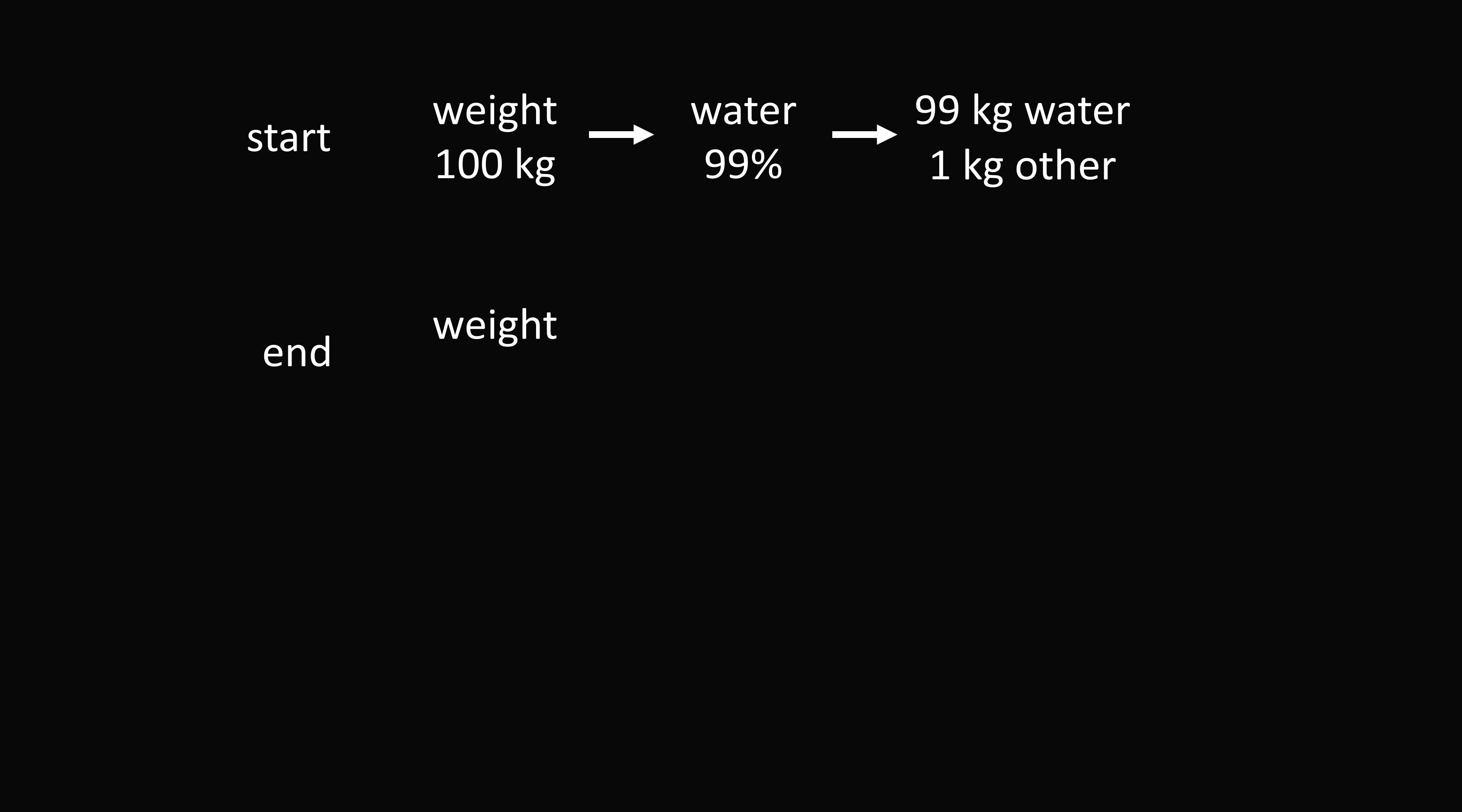Now what happens at the end? We don't know the weight at the end. That's what we want to solve for. But we do know the water content is 98%. What else do we know? We know that the water evaporates, but the 1 kilogram of other weight has to remain the same. So we take this 1 kilogram of other weight and we bring it to the end.